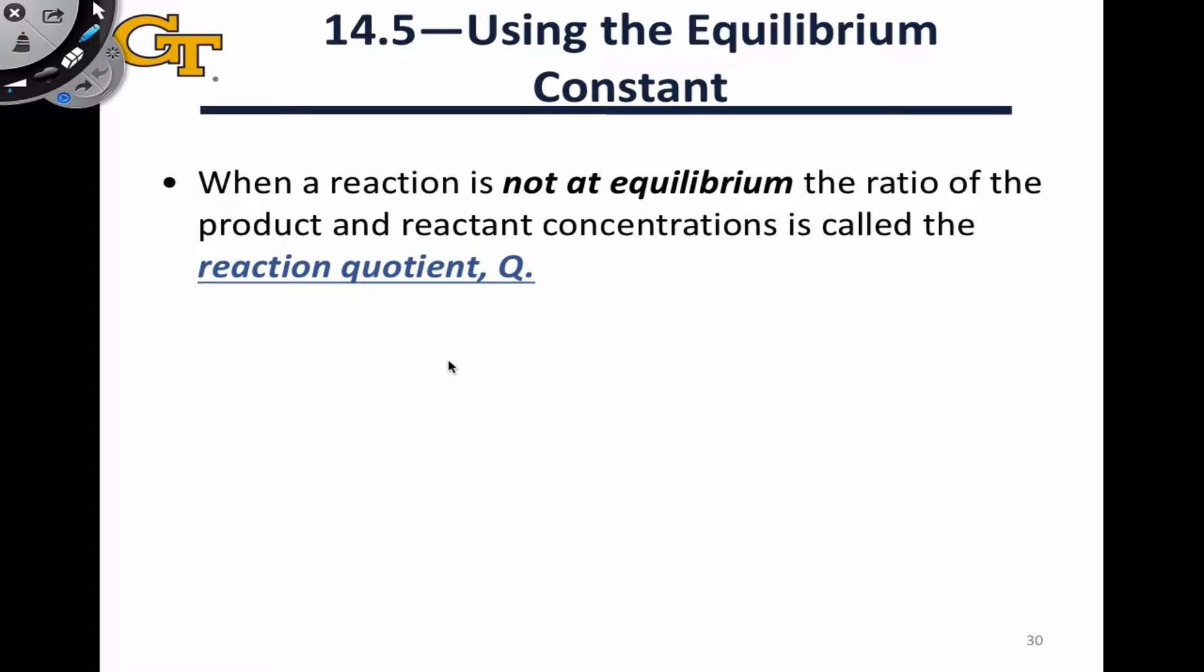The equilibrium constant gives us a benchmark of how much a reaction favors reactants or products, but to really use that benchmark, we have to have something to compare to it. What we typically use to compare to it is this value Q, which is called the reaction quotient.